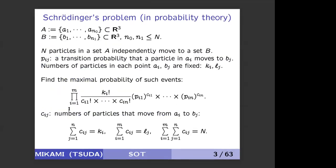Let me start from Schrödinger's original program, which I found in the literature. Suppose that we have two sets A and B, where you can find particles in each point, and the total number of particles is capital N. Each particle moves independently to set B, and the transition density from a_i to b_j is given — it's a random variable. The constraint is that the number of particles in each point are fixed.